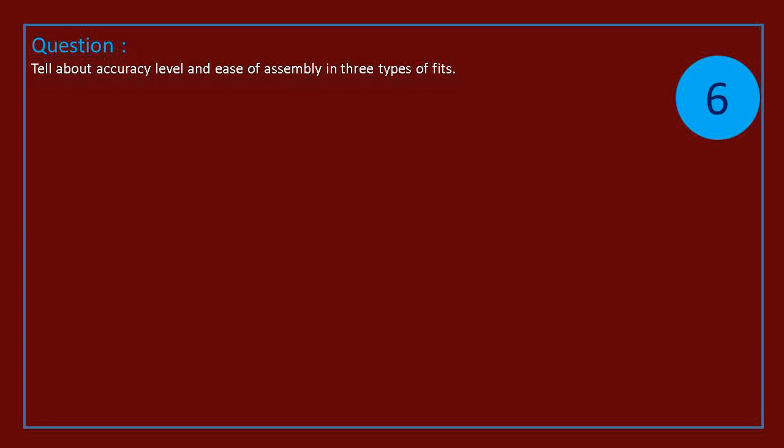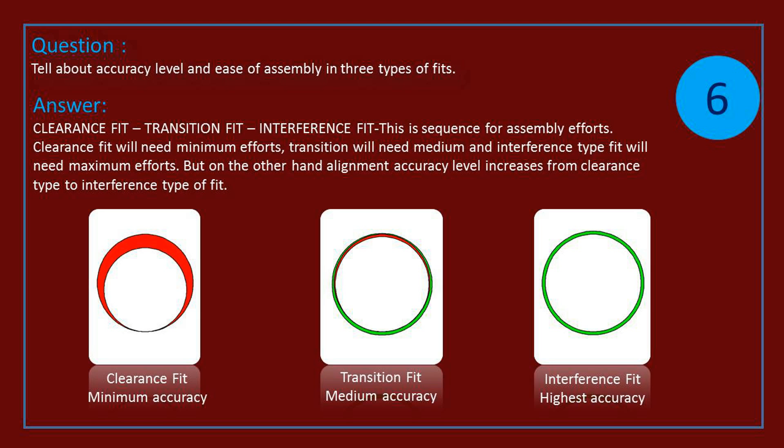Question: tell about accuracy level and ease of assembly in three types of fits. Answer: clearance fit will need minimum efforts. Transition will need medium and interference type fit will need maximum efforts. But on the other hand, alignment accuracy level increases from clearance type to interference type of fit.